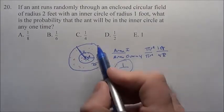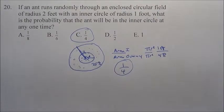So the answer here is there's a 1 out of 4, choice C, that that ant will be in the inner circle.